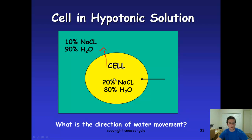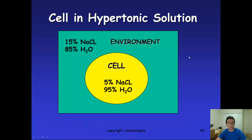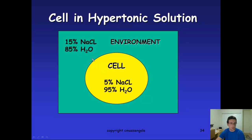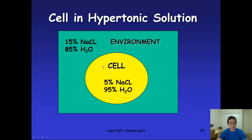If you have a hypertonic solution, which is the opposite, you're going to have more concentration on the outside. The solute goes from outside to inside, which means osmosis happens in the opposite direction — water moves from inside to outside. In this case, the cell will shrink.